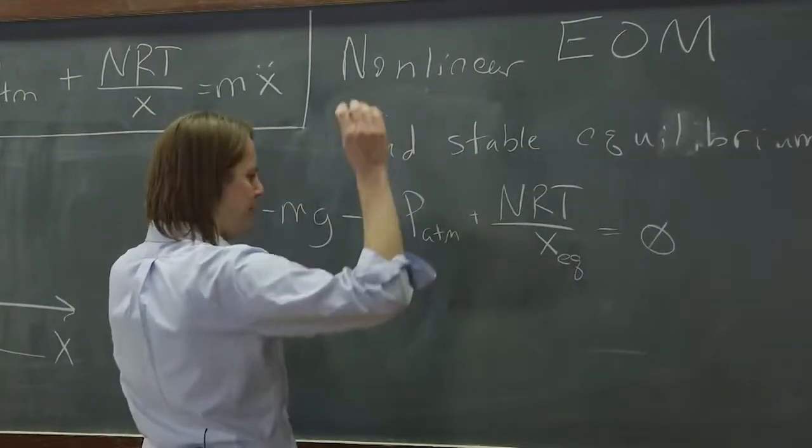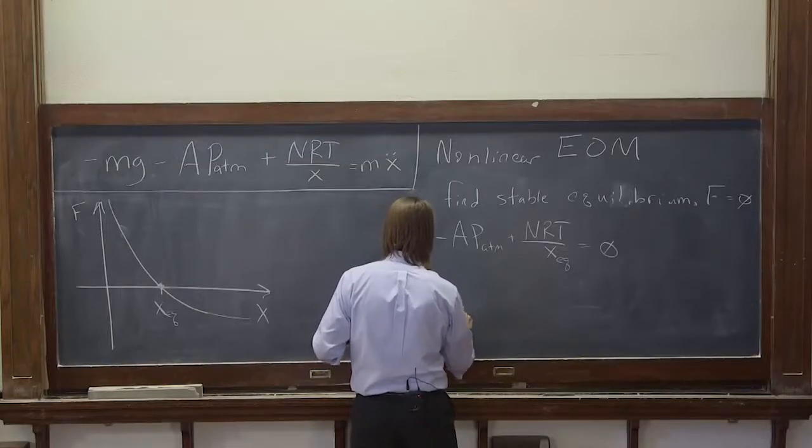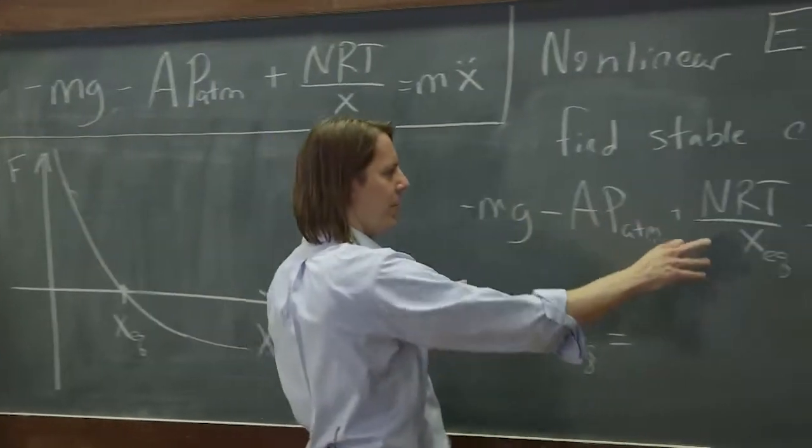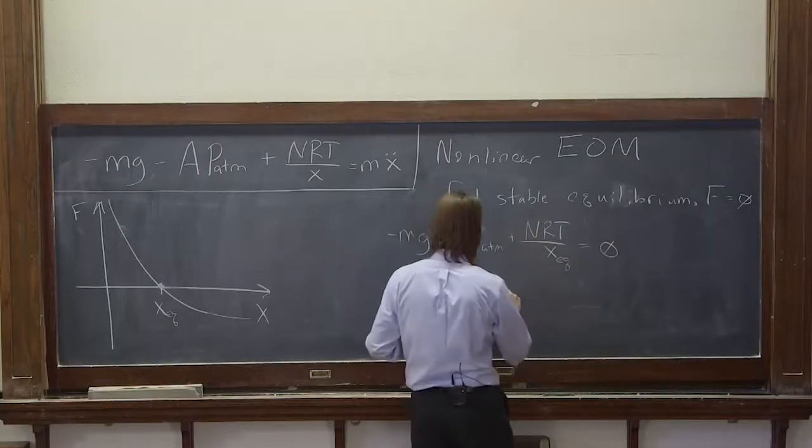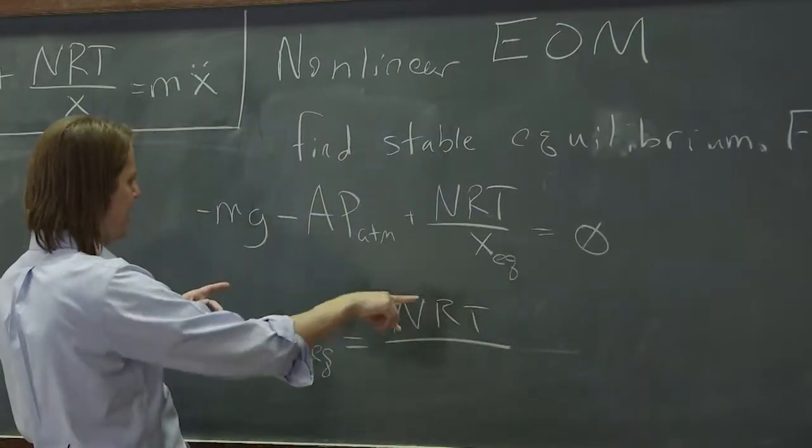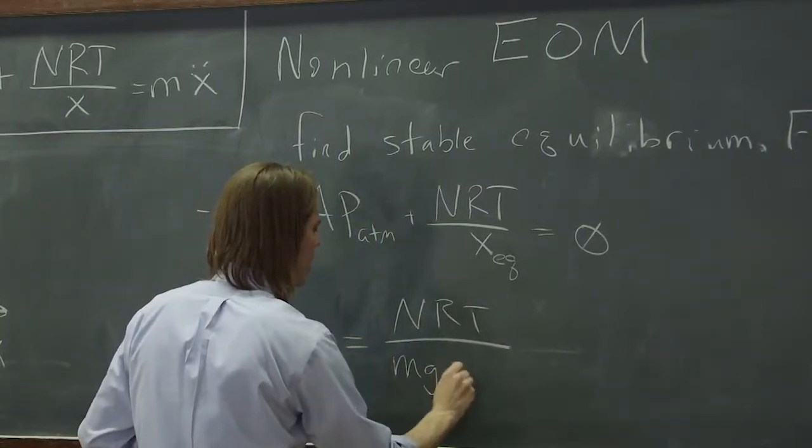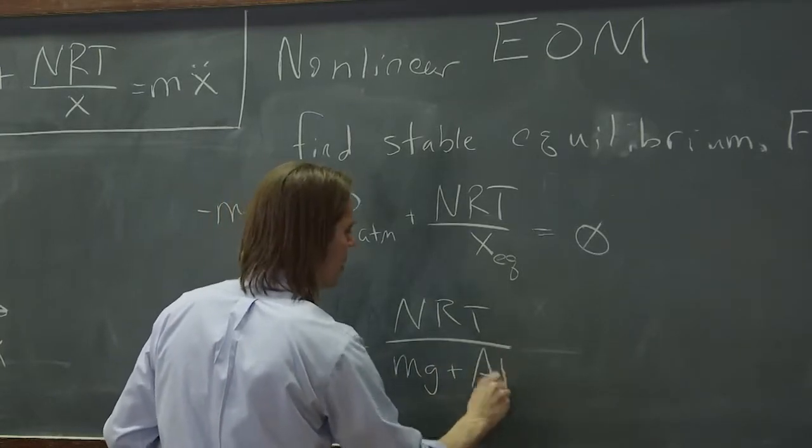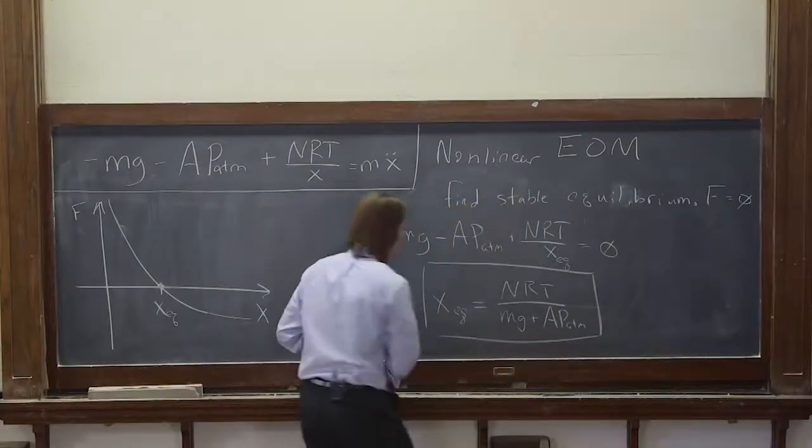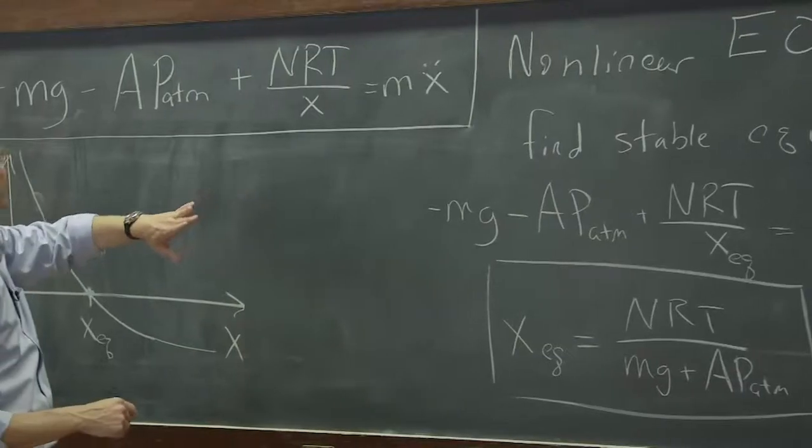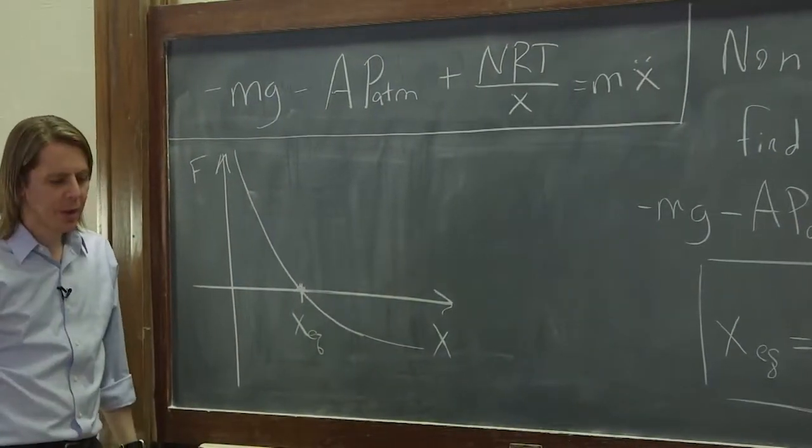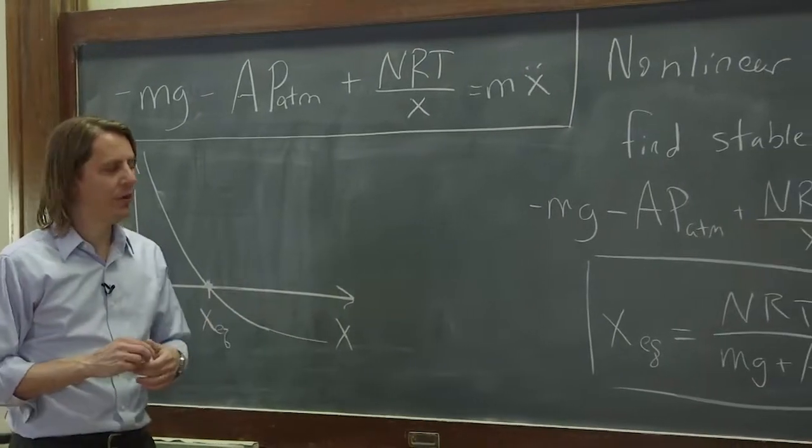Okay, so we can bring these over and flip things around and solve for the equilibrium position. And let's see, these over here, then that goes underneath, but then you flip it over. It's nRT is in the top, over, and then these became positive, mg plus the area times P atmospheric pressure. That is the value of X such that if you plug it in here, you get zero. And you can kind of see that that's going to happen. And that's this point right here. So this is where we need to expand. We'll expand around XEQ.